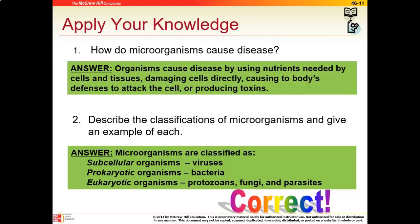Organisms cause disease by consuming nutrients needed by surrounding cells and tissue, directly damaging a cell by taking over its DNA and causing it to lyse, attacking the body's defenses, or producing a toxin detrimental to surrounding tissue. The three classifications are: subcellular (viruses and prions), prokaryotic (bacteria — the most simple single-celled organisms), and eukaryotic (protozoans, fungi, and parasites — larger and more complex).